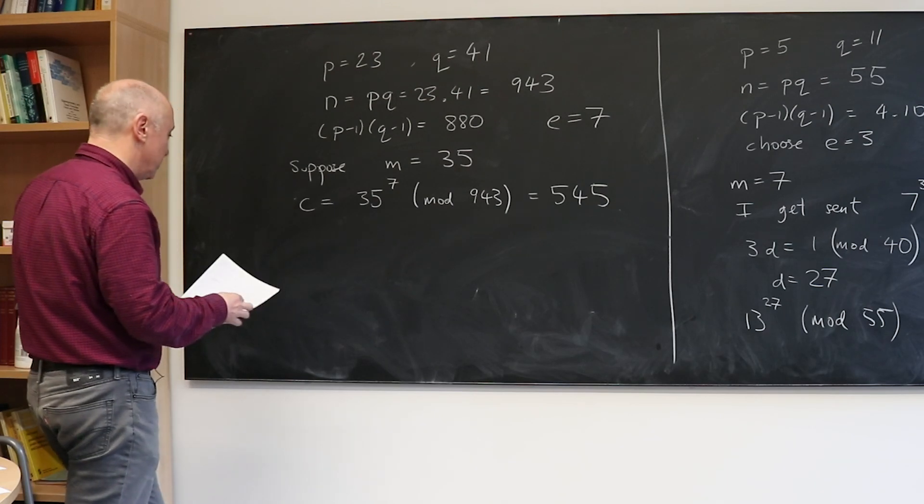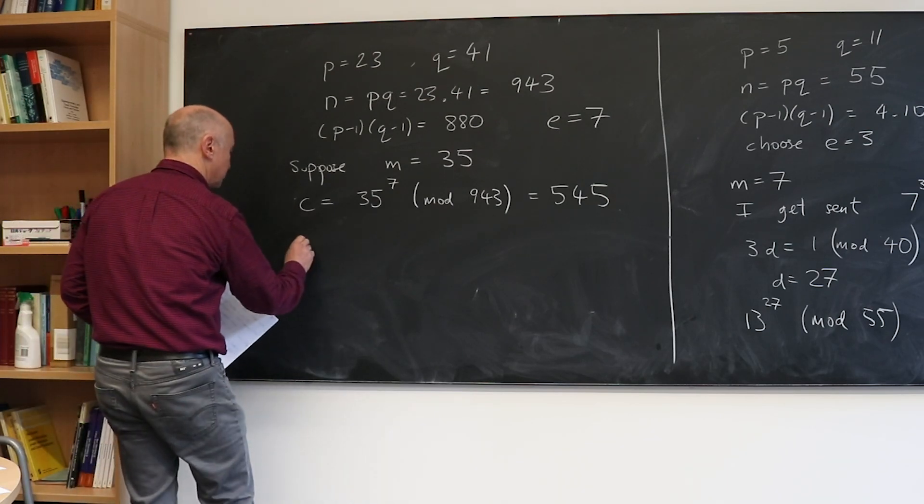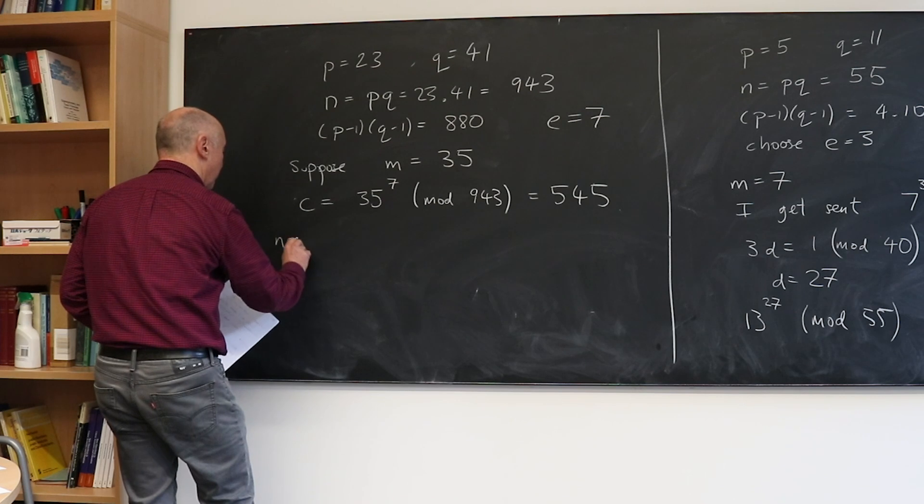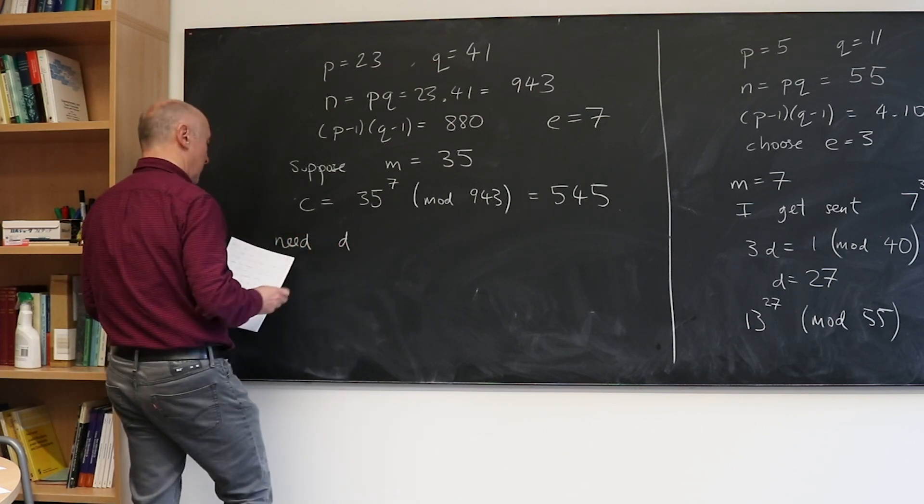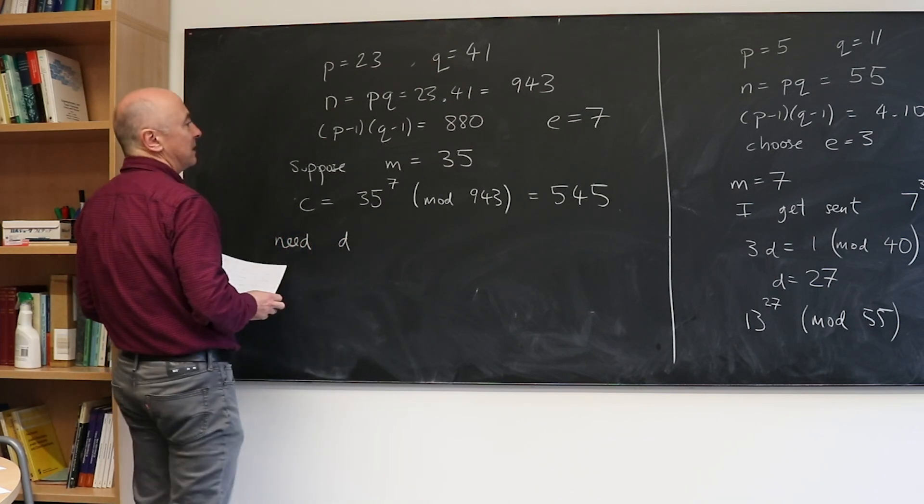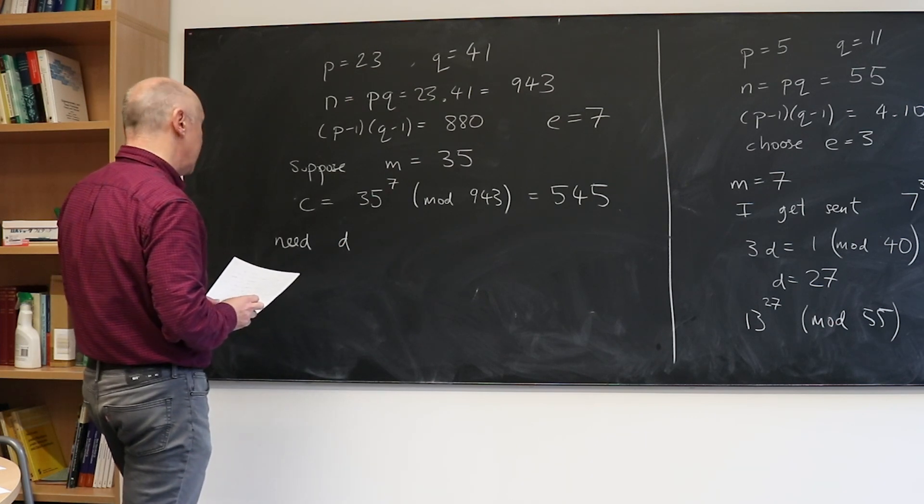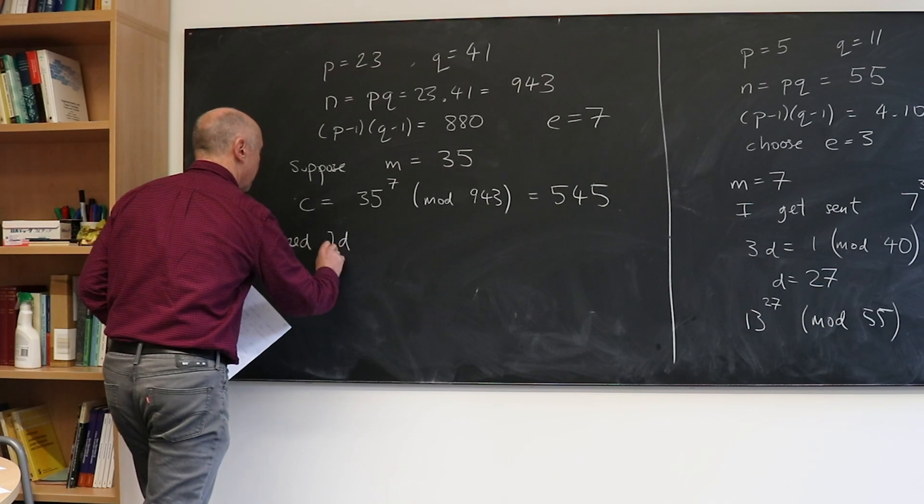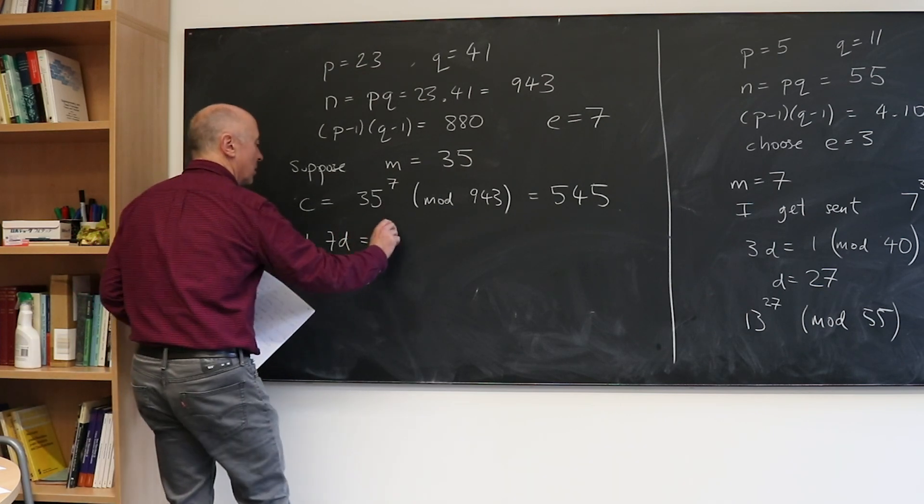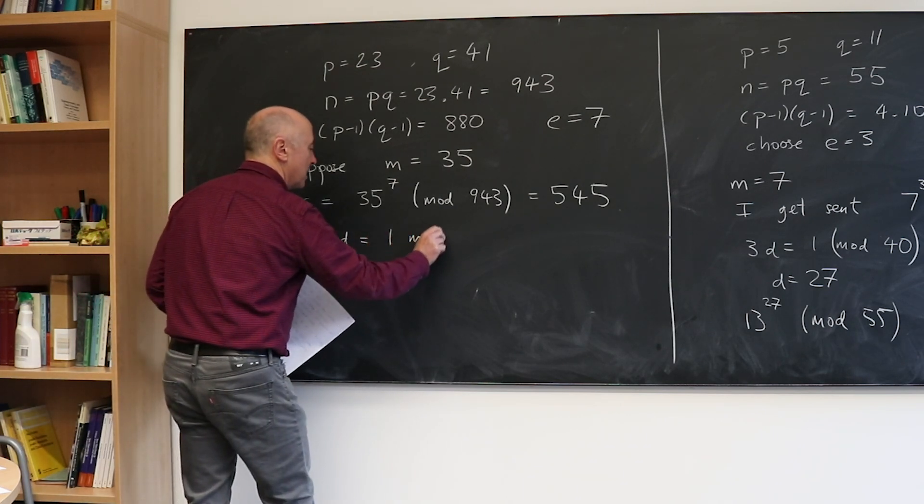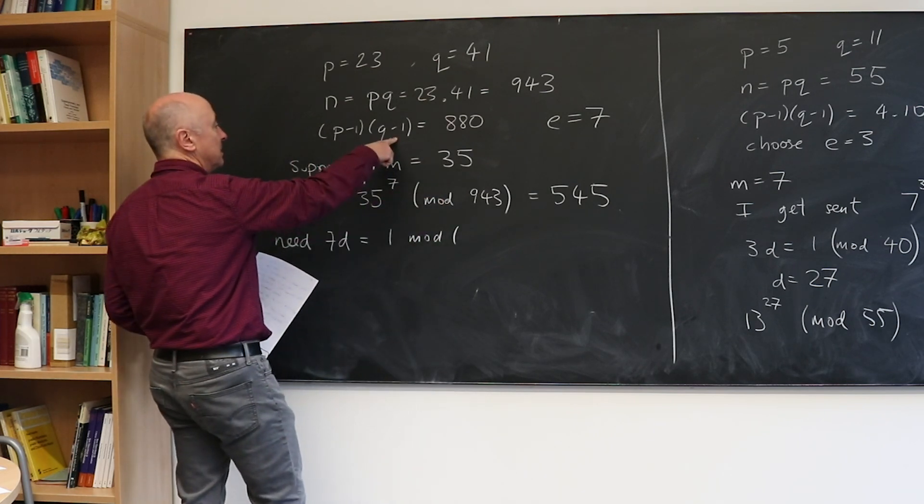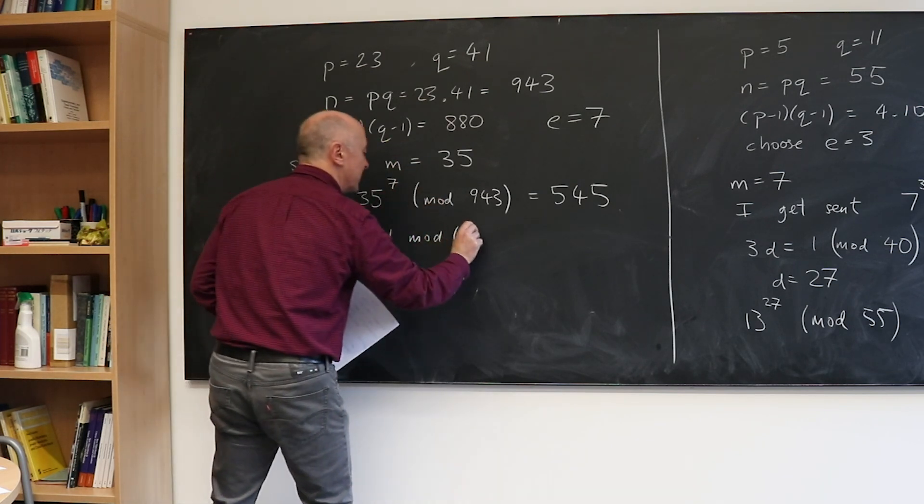So to decode the message, we need to find a D such that D times E, which is 7, is congruent to 1 modulo P minus 1 times Q minus 1, which is 880.